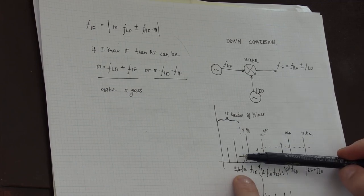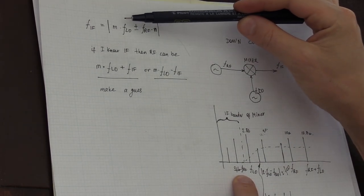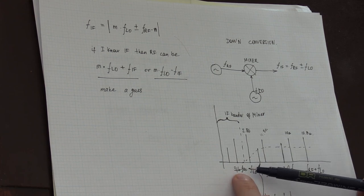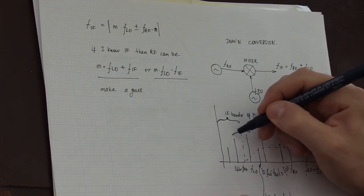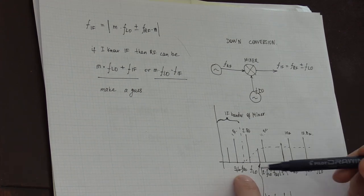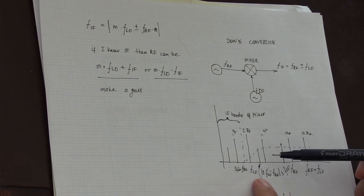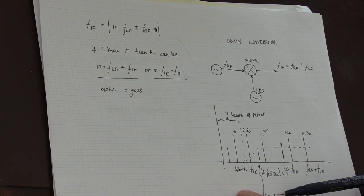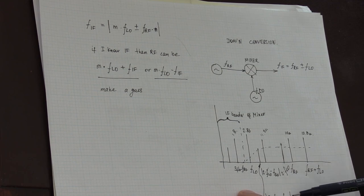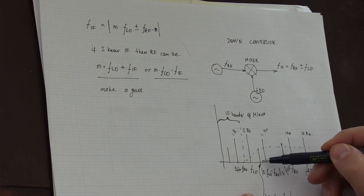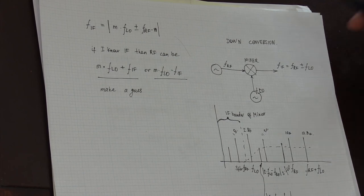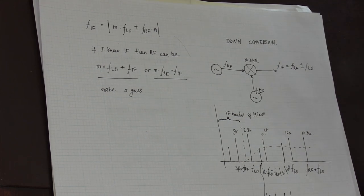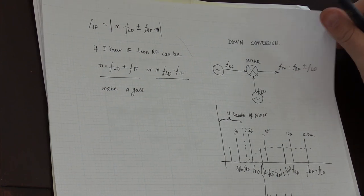Going to the next mixing product: 4·FLO minus FRF, and 5·FLO minus FRF — this one comes out positive, taking the absolute value, it's going to be at around 3.7 gigahertz. In all these calculations I'm basically assuming that the signal from my gun oscillator will be somewhere around 10.25 to 10.4 gigahertz. I could be wrong as well.